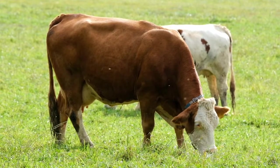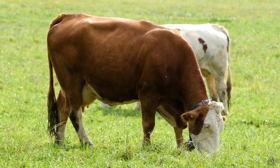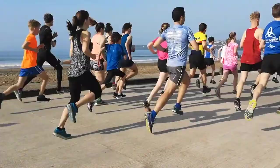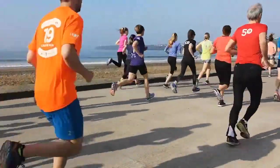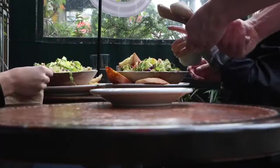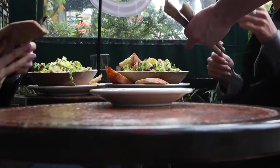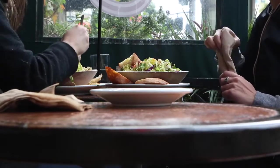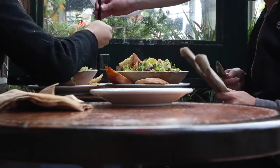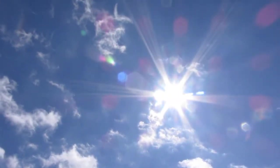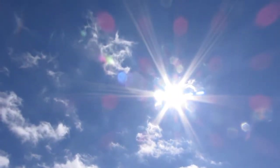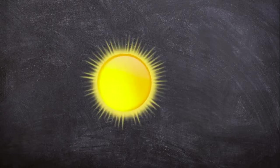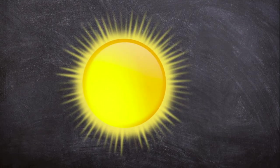Plants and animals need energy to survive. Energy is what allows us to grow and move around. Humans and other animals eat food to get the energy we need. But where does all that energy come from? Believe it or not, all the energy on earth comes from the sun. The sun provides all the energy we need to live and grow.